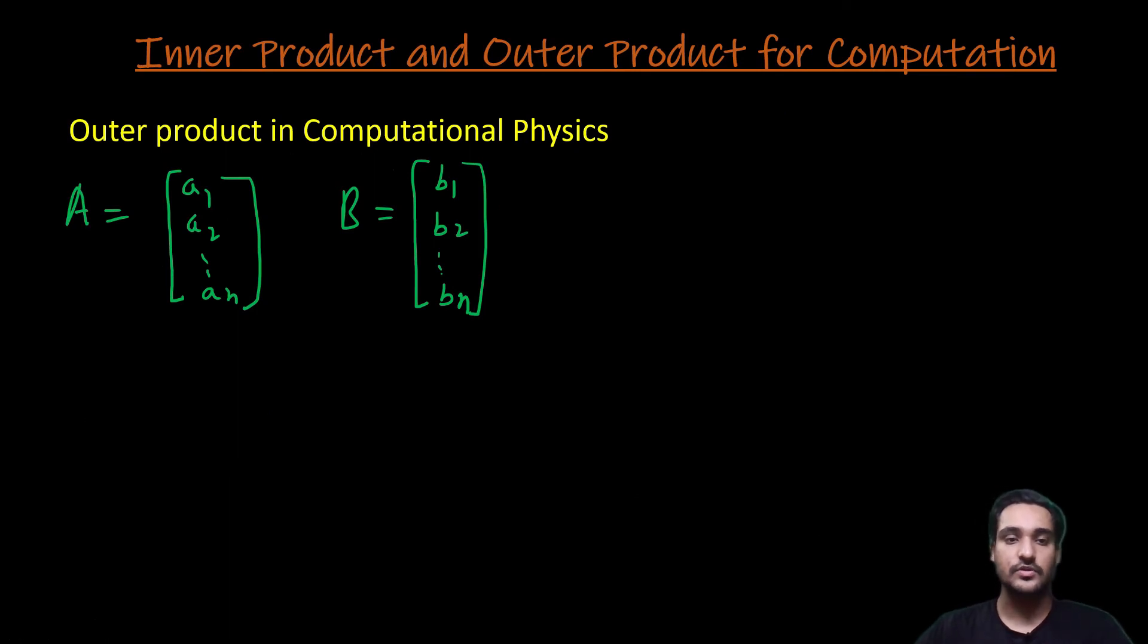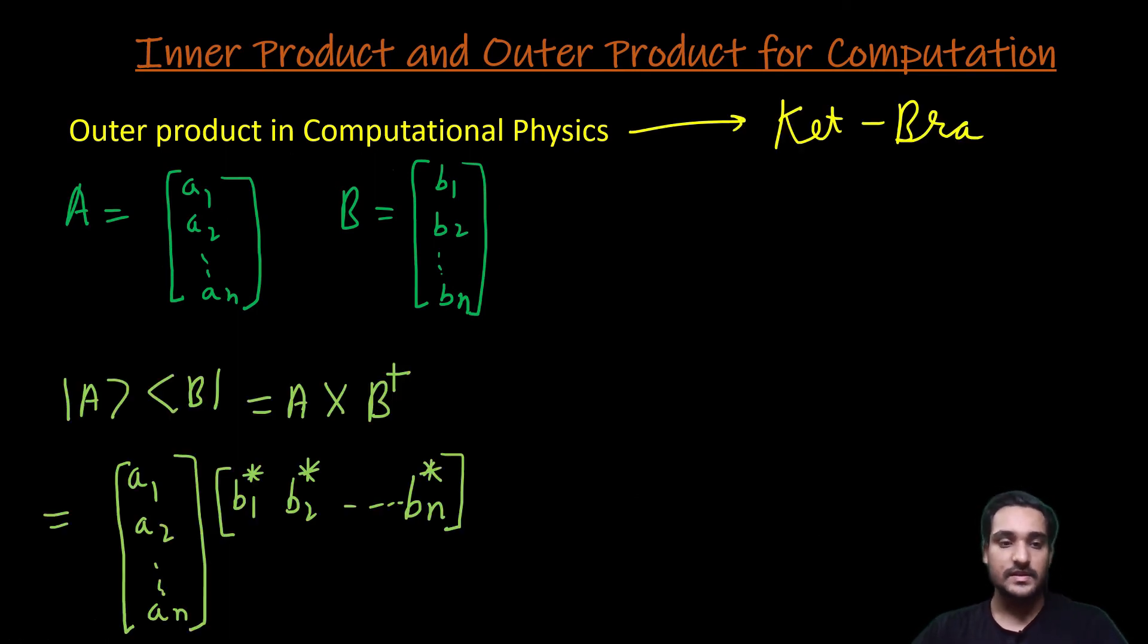If we talk about the outer product in computation, then it is a different kind of product. As we can see, it is called as a ket-bra product because first we have a ket state multiplied with a bra state.